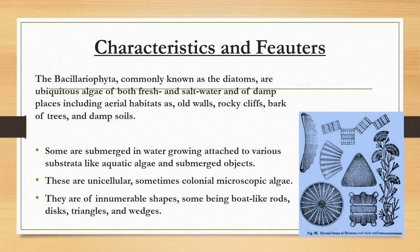Characteristics and features: These species are commonly known as diatoms and they are algae present both in freshwater and saltwater, and in damp places. They have the ability to exist on old walls, rocky cliffs, bark of trees, and damp soils. Some are submerged in water, growing attached to various substrata like aquatic algae and submerged objects. They are unicellular, sometimes colonial, microscopic algae. They are of innumerable shapes, some being boat-like, rod-like, disk-like, triangular, and wedge-shaped.